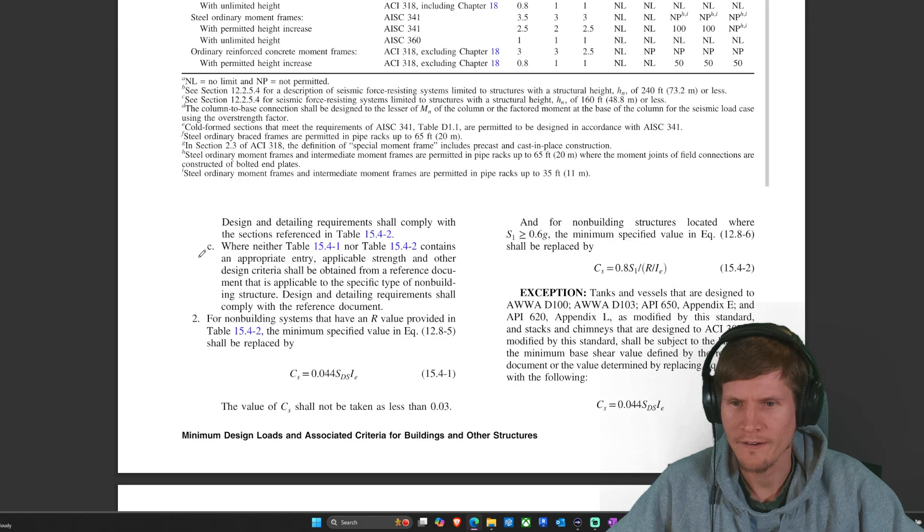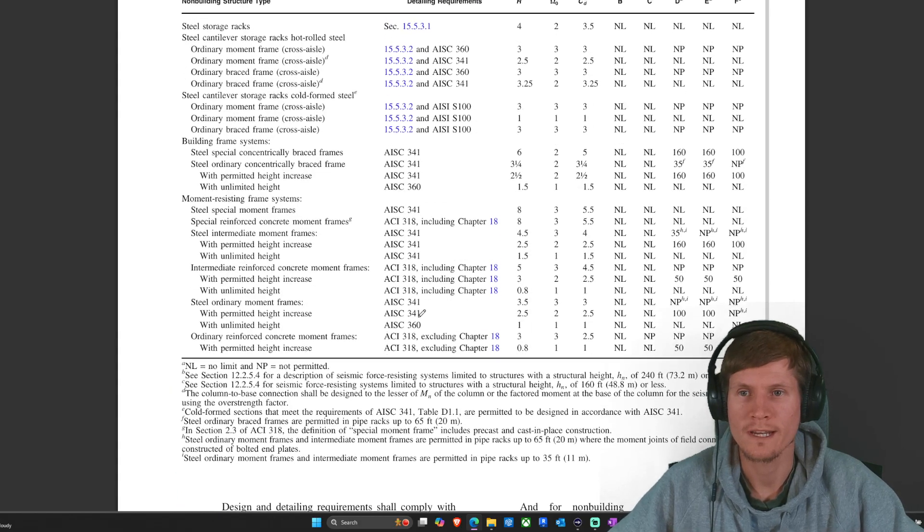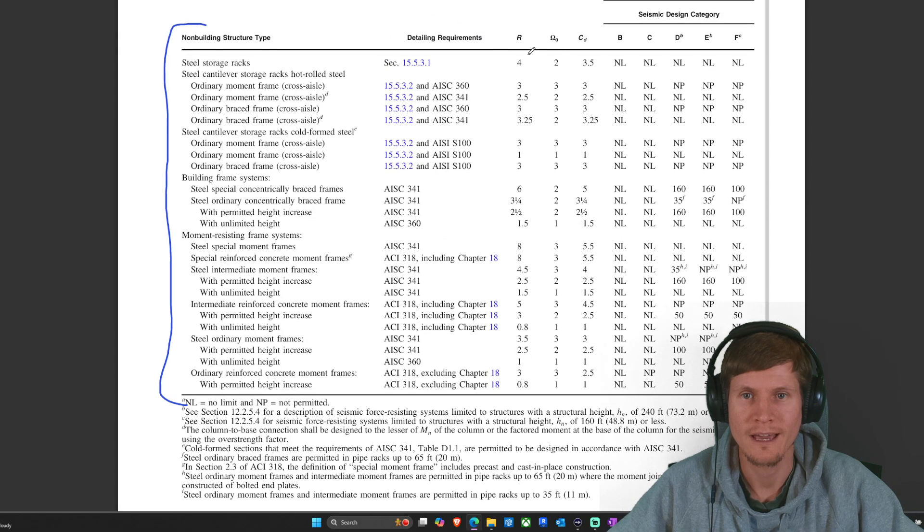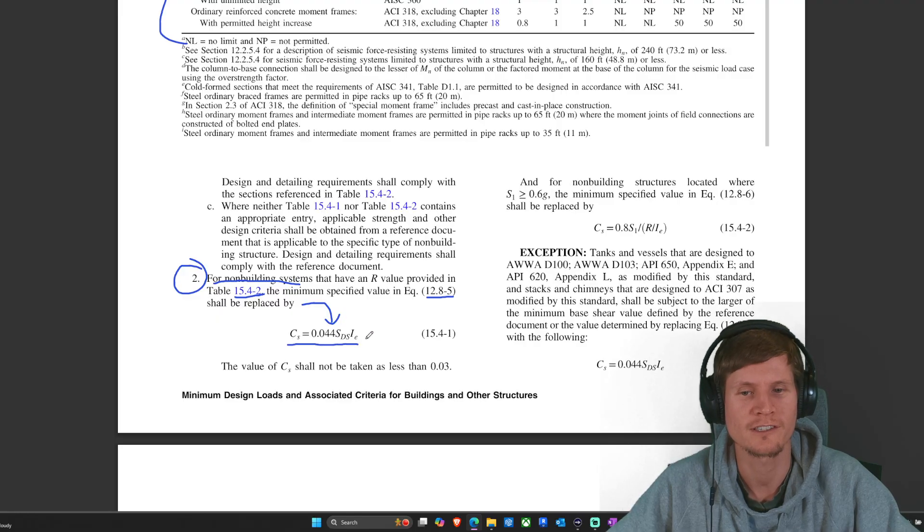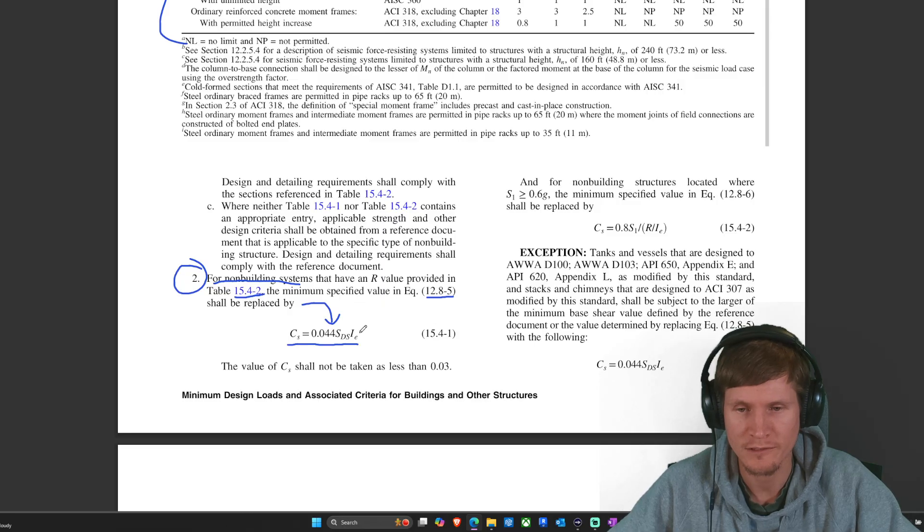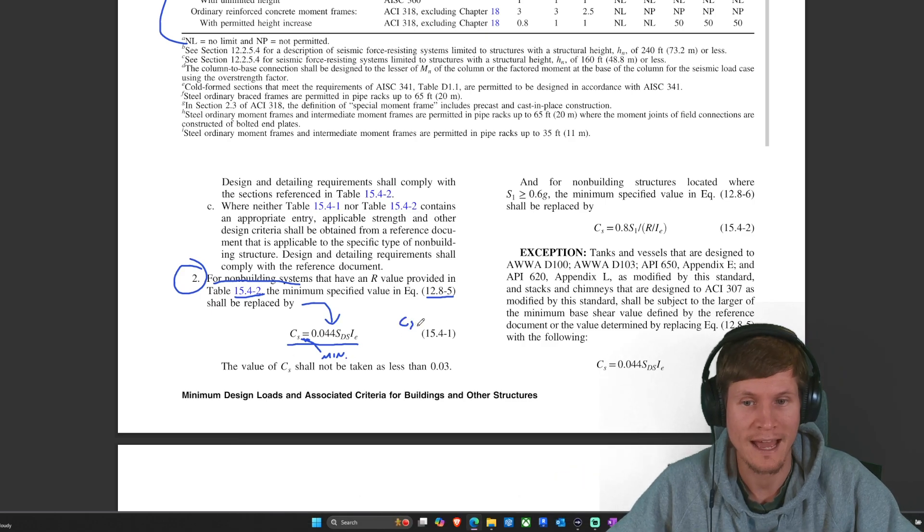I think it's beneficial for your studies. We're going to find ourselves at numero two. So for non-building systems that have an R value provided in table 15.4-2, the minimum specified value in equation 12.8-5 shall be replaced with this guy. You might think we need to jump in and use these tables in order to get more criteria so that we can solve for our C sub s. But the problem is asking for the minimum C sub s. So you're not going to be finding yourselves up in this table. It's really just coming down and checking the additional equations that spit out your C sub s minimum value.